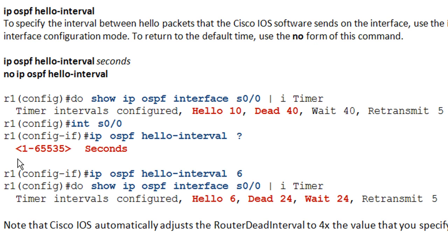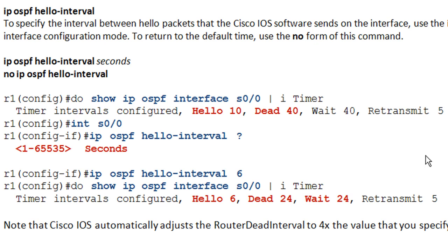After issuing the show ip ospf interface command again, we can see the hello timer has been successfully set to 6 seconds, and the dead interval has also changed automatically. IOS will change your router dead interval to four times the hello interval whenever you change the hello interval — so changing to 6 sets dead interval to 24, changing to 12 sets it to 48. This maintains the four-missed-hello rule, ensuring convergence behavior stays consistent.